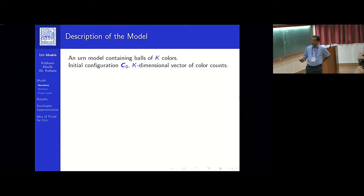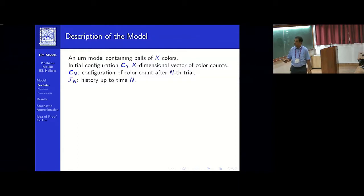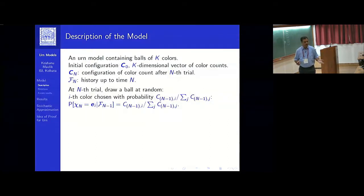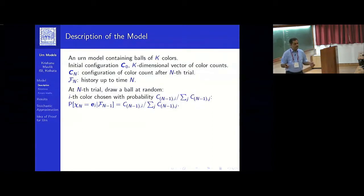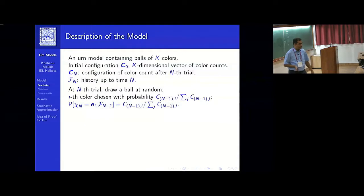The coordinates of this configuration vector at the Nth step will be Cₙ, where the ith coordinate is the amount of ith color present. Fₙ is the history up to time n. You choose a color at random: given the past history, you choose the ith color with probability proportional to the amount of that color present. If you choose the ith color, I'll indicate it by the ith coordinate vector eᵢ. So χₙ is the indicator of the color drawn at time n.